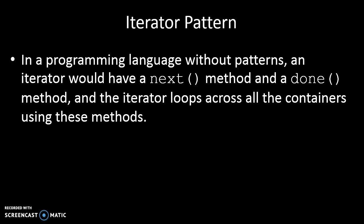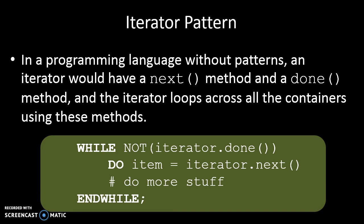In a procedural programming language, how we'd probably do this is we'd have two methods: next and done. The next method would say give us the next element in the list or container, and the done method would say that we've reached the end of all of the elements. Our code would look something like: while not done, get the next item and do stuff. For procedural programming languages, that works.